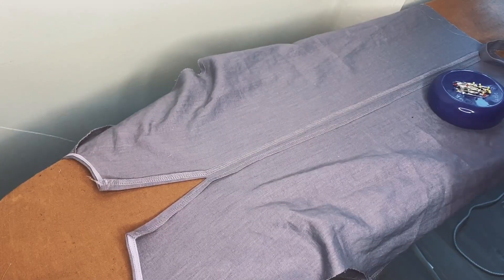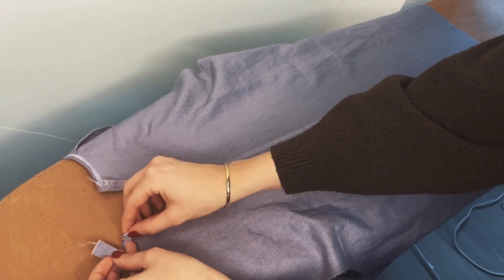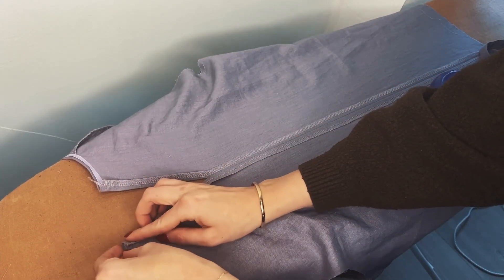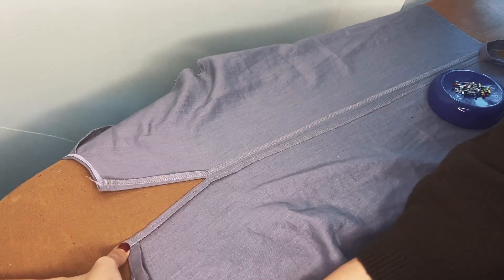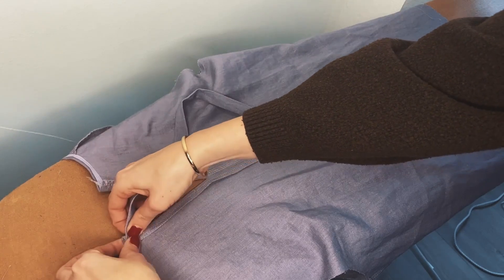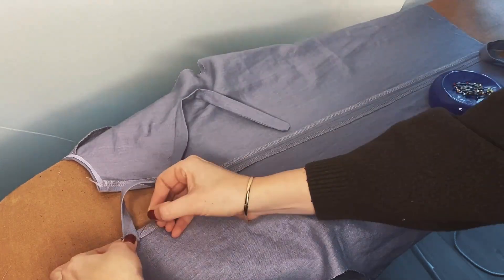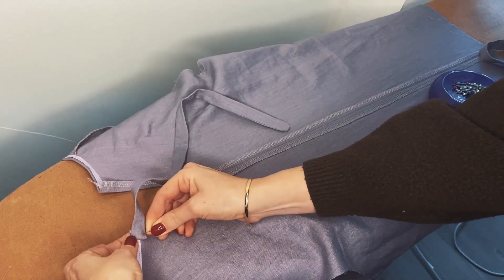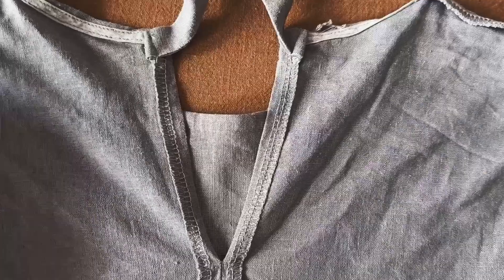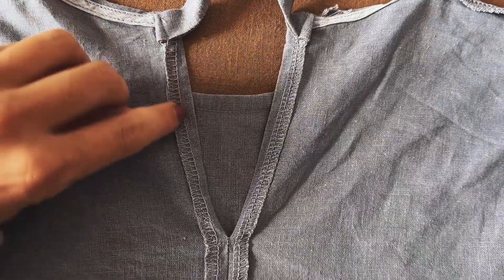Put the unfinished edge of the strap underneath the folded over fabric, with the strap facing away from the seam. Now fold the strap over the fabric to the other side and pin it. Repeat the same process on the other side of the shirt. Now stitch around the gap.